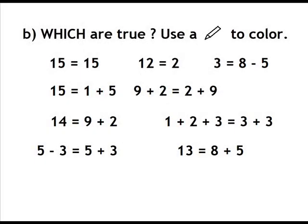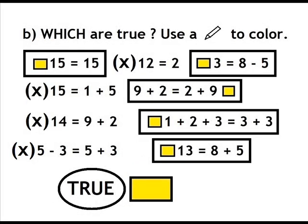Which are true? Use a pencil to color. 15 equals 15. 3 equals 8 minus 5. 9 plus 2 equals 2 plus 9. 1 plus 2 plus 3 equals 3 plus 3. 13 equals 8 plus 5. Yellow square means true.